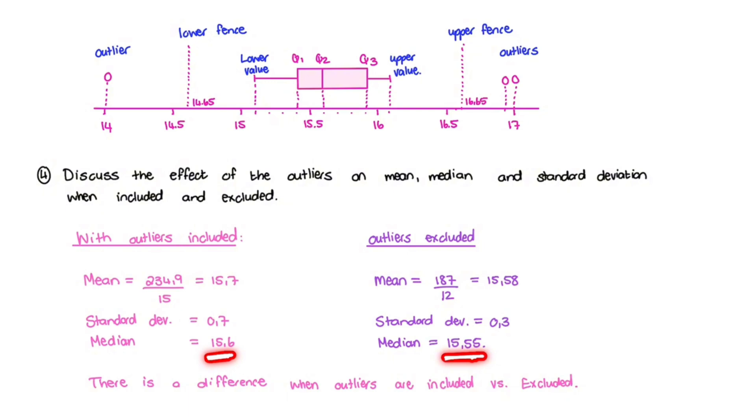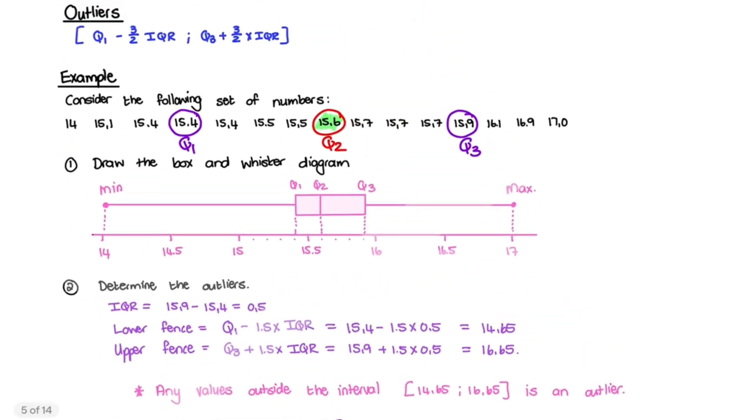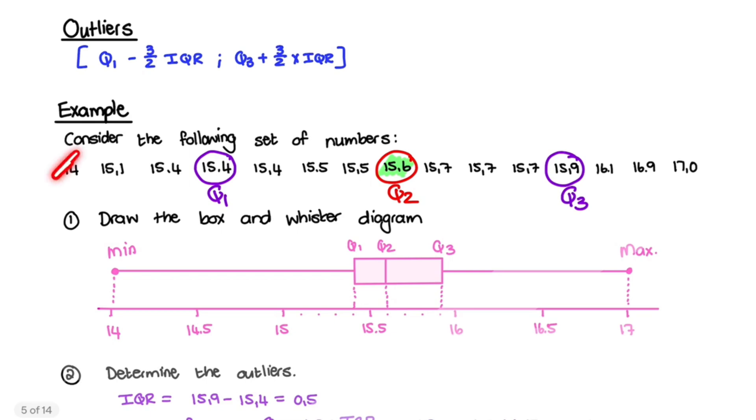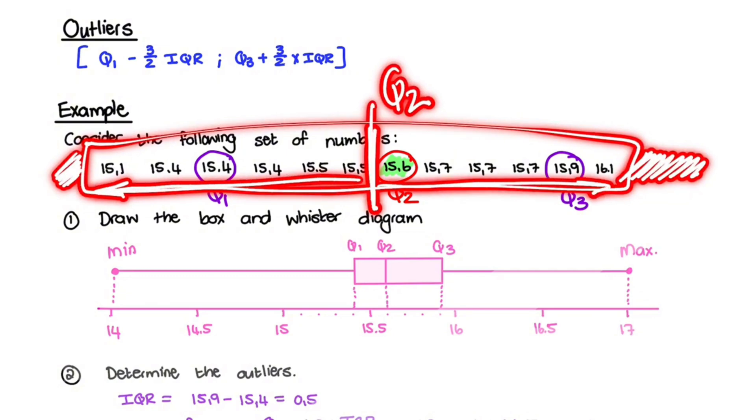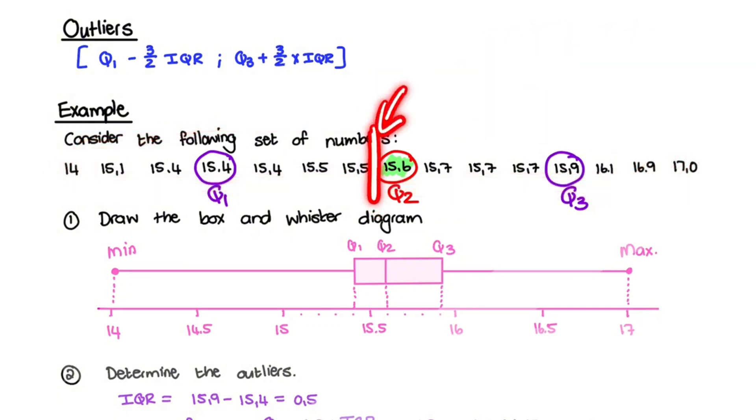And the median would also change slightly. So let me show you on our data set what happens to the median. So if I reject the 14, and if I reject the 16.9 and 17, now I only have 12 values. And the middle of those 12 values is actually between 15.5 and 15.6. That will be our quartile 2. If you notice, that value in between 15.5 and 15.6 don't exist. So we say 15.5 plus 15.6 divided by 2. And that is in between here. So that is 15.55. So this value is also not part of our data set, but we estimate what we think the median would be, if the outliers are excluded.